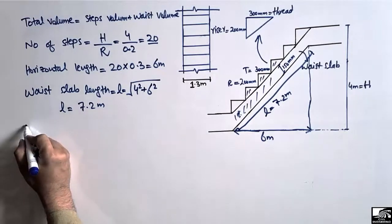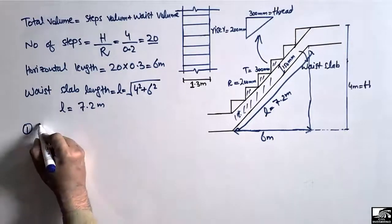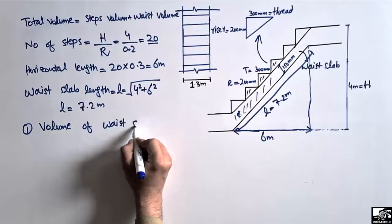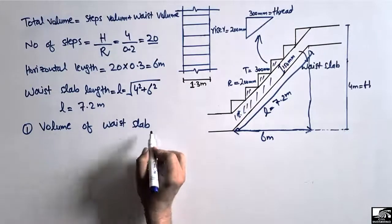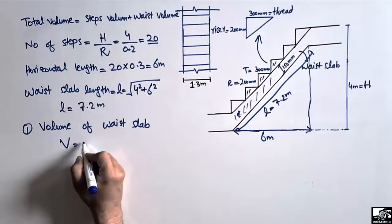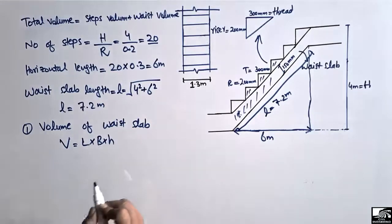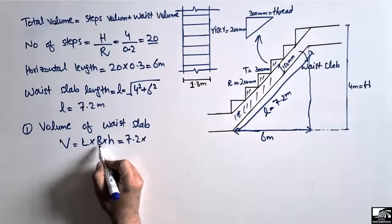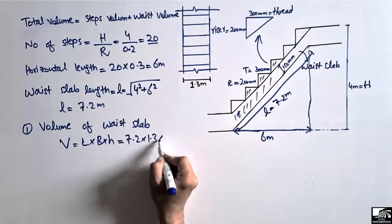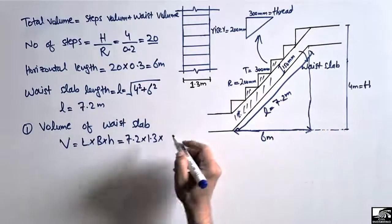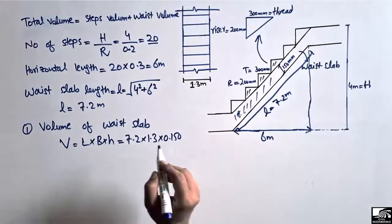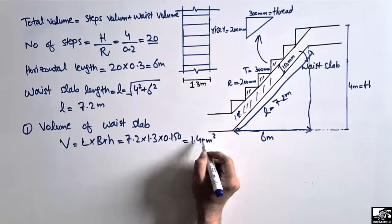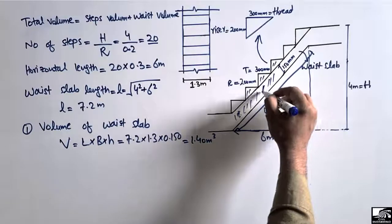Now we find the volume of the waist slab. The waist slab volume equals length × breadth × thickness. The length is 7.2 meters, the breadth is 1.3 meters, and the thickness is 150 mm, which is 0.150 meters. Multiplying these values, we get 1.40 cubic meters. That is the volume of the waist slab.